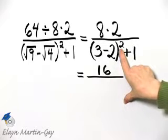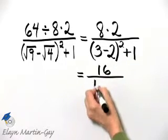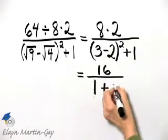And 1 squared, that's 1 times 1, is 1. And then I still have plus 1.